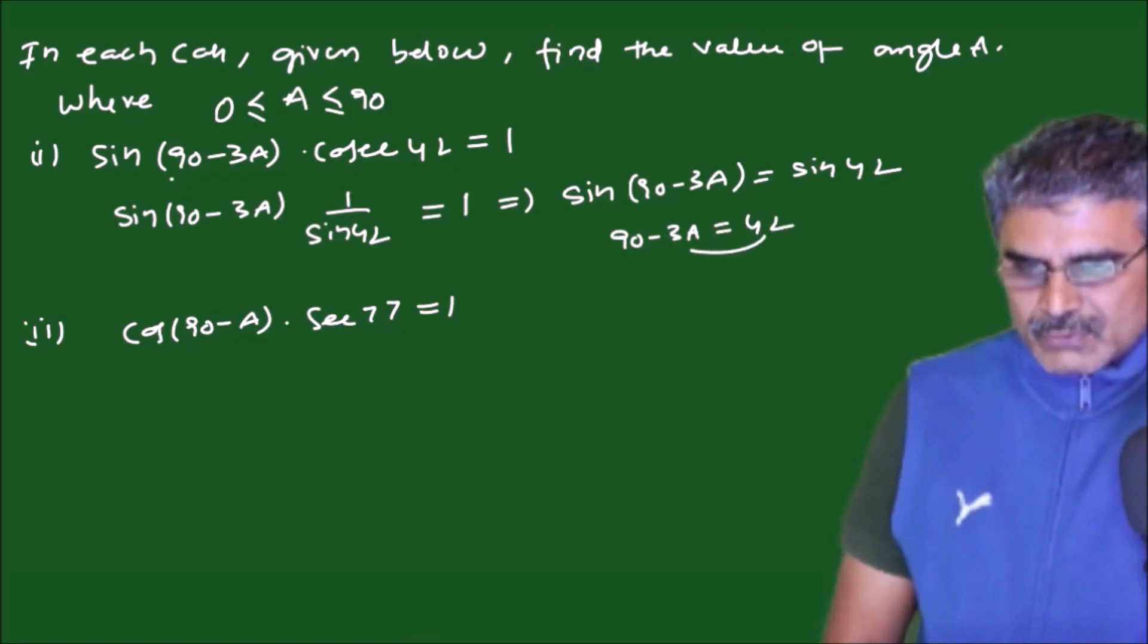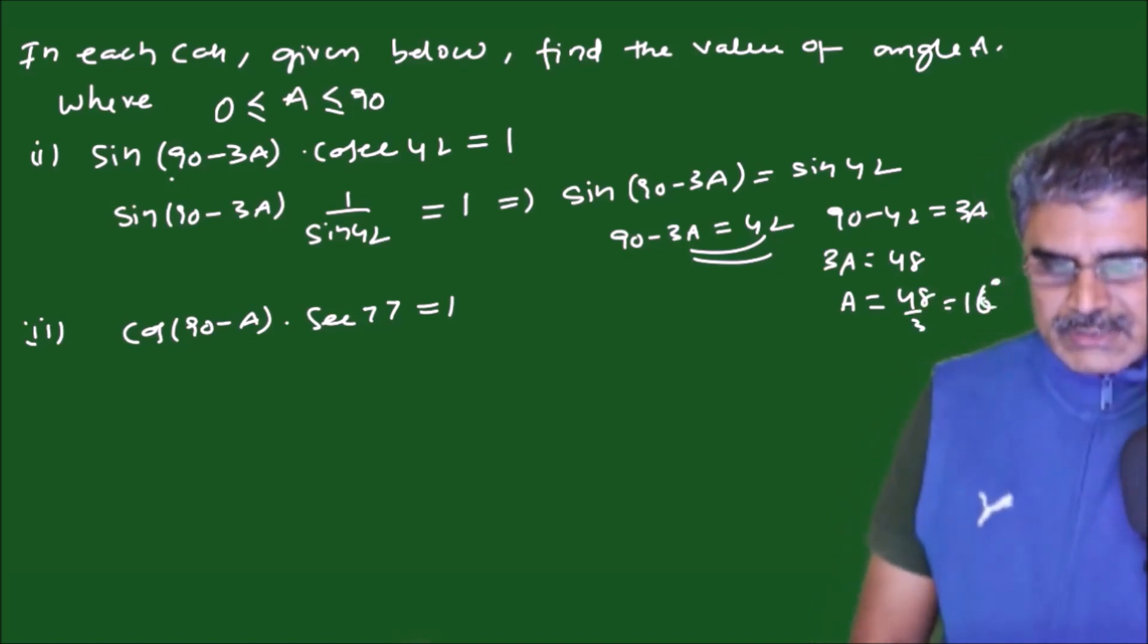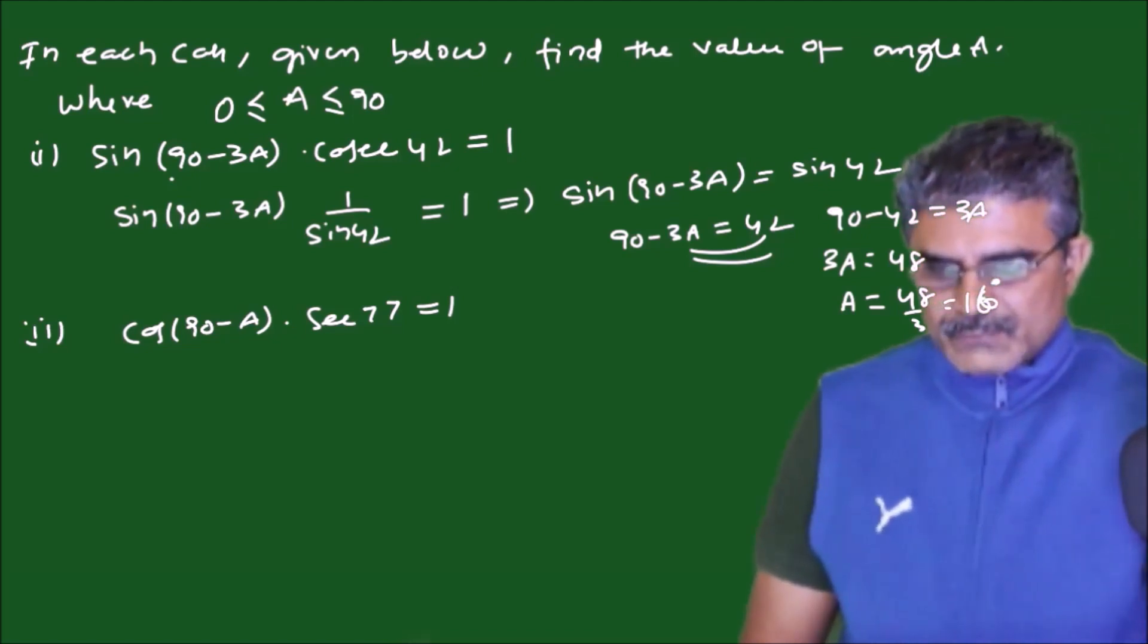If you swap these two you will have 90 minus 42 is equal to 3A. So 3A is equal to 48 and A is equal to 48 by 3 which will be 16 degrees. So angle A is 16 degrees in first case.